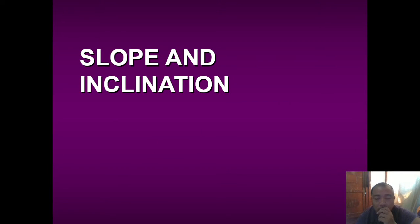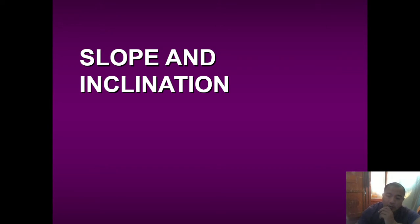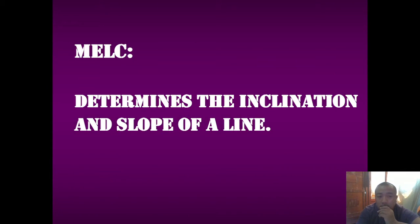Hello, Grade 9 Special Mathematics class. We are now on our new lesson: slope and inclination. This is a topic for week number six in analytic geometry. We are now through discussing the distance formula, the midpoint formula, and the division of the line segment. So here we are on a new topic for week six — slope and inclination. Our lesson determines the inclination and slope of a line.